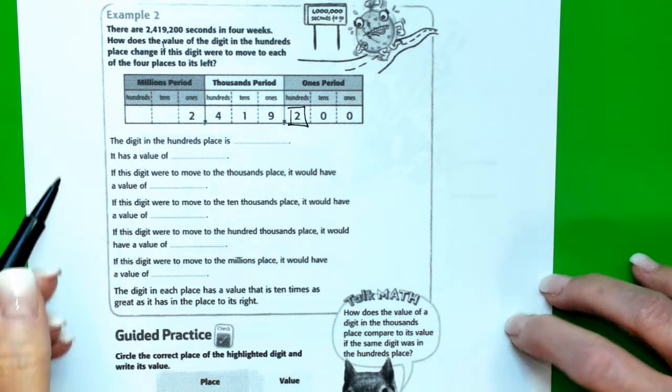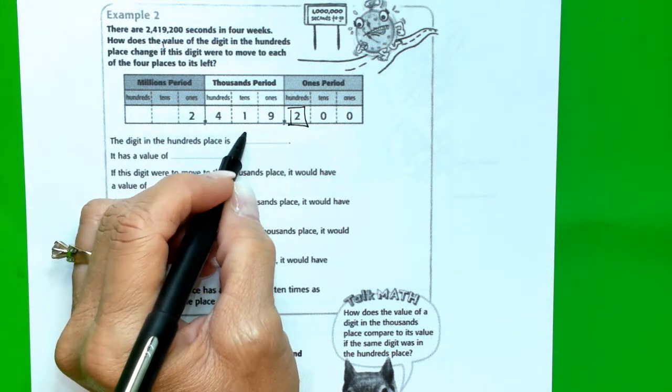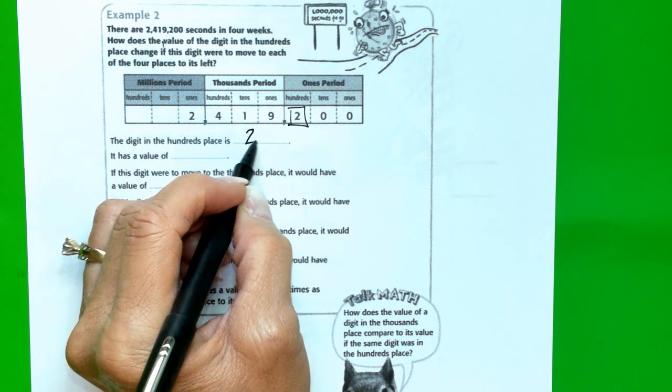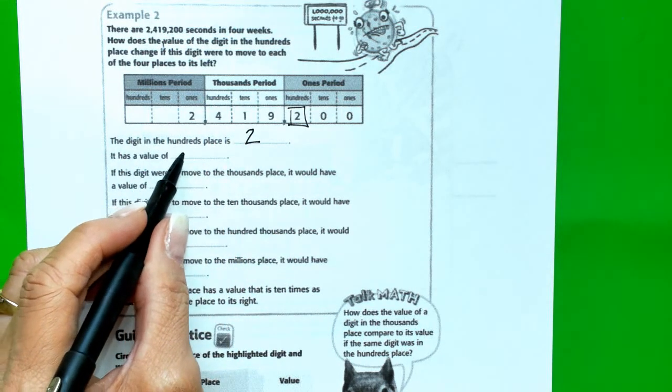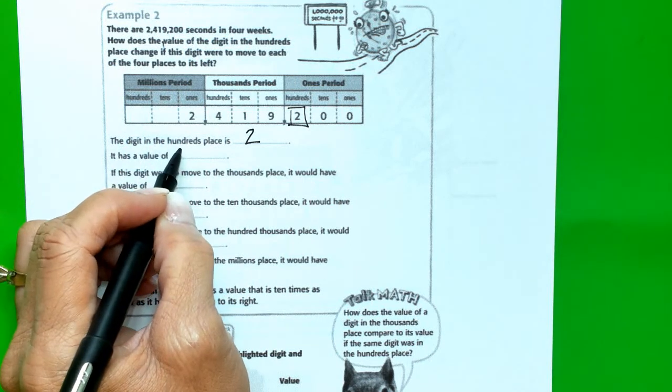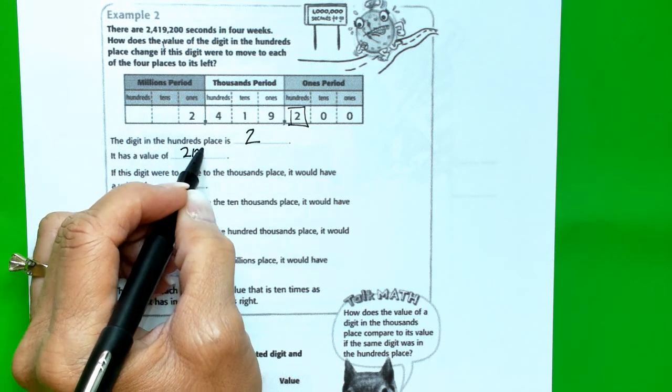So we're talking about the digit that's here, the hundreds place. The digit in the hundreds place is, hopefully you all said 2. It has a value of, say it with me everybody, 200. You're right.